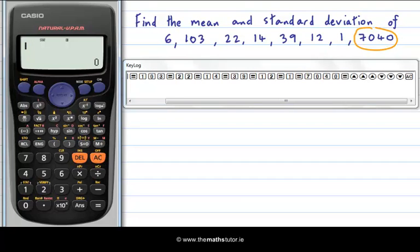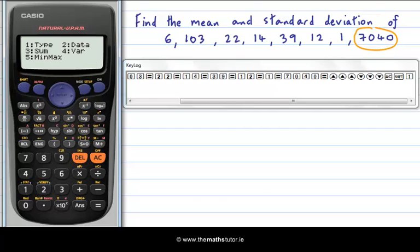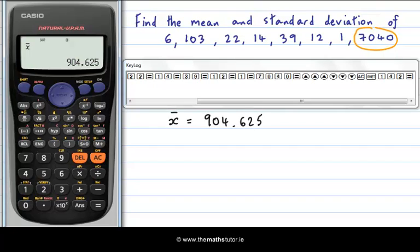So I hit AC which clears the data. I then hit shift and 1 which brings up the stat menu. And you can see number 4 for variance is one I want to select. So I hit 4 and the two pieces of information that I'm interested in is x bar and sigma x. So x bar is the mean. That's number 2 and that's equal to 904.625. So let's write that out here. So x bar is equal to 904.625.